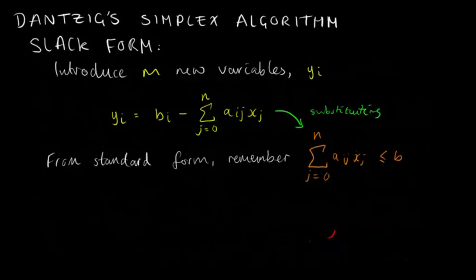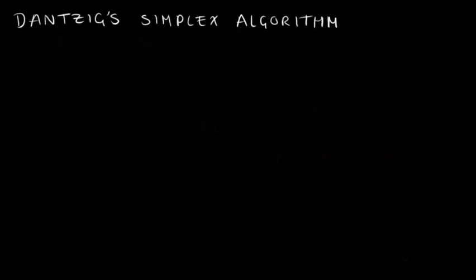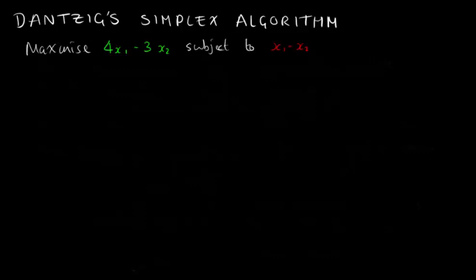Right, so now let's get on to how to actually do the algorithm. Let's take an example linear program where we are maximizing this objective function under these constraints. As you can see, this problem is already in standard form, so now we have to convert it into slack form.